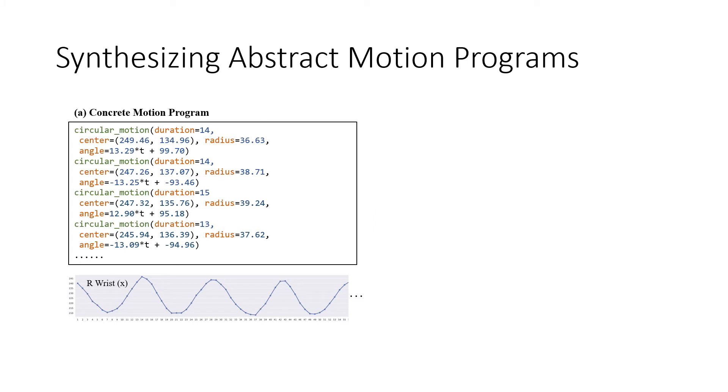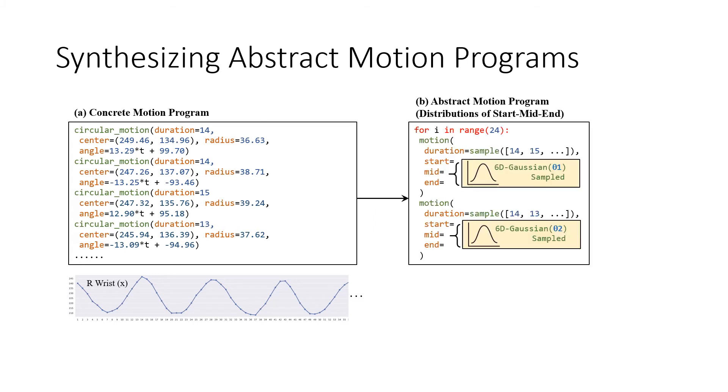An abstract motion program is synthesized by searching for windows of repetitive concrete primitives that could be rolled into a for loop. Since repetitive primitives could have similar but not exactly the same motion, we roll these primitives into a probabilistic primitive that captures the distribution of motion. At execution time, a concrete primitive is sampled from the probabilistic primitives.